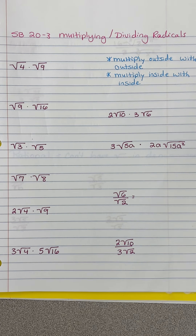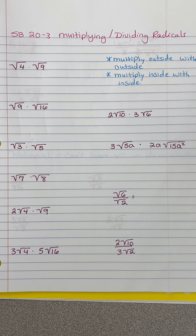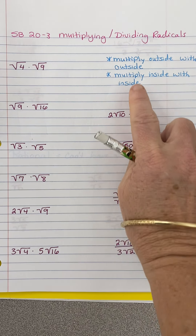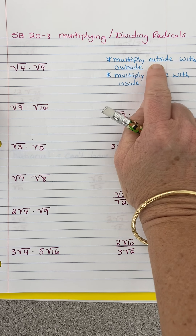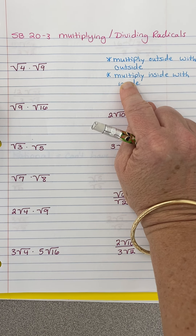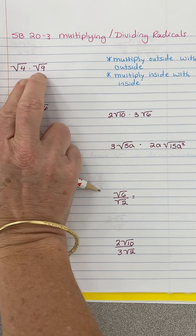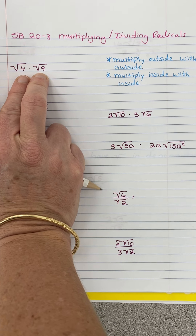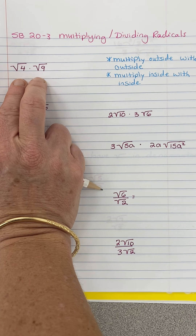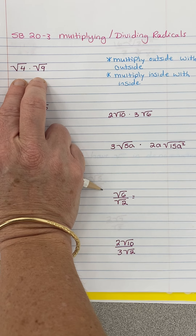This lesson is going to be talking about multiplying and dividing radicals. The gist here is we multiply outside with outside, and inside with inside. Similarly to adding and subtracting, we can simplify first and then multiply, or we can multiply and then simplify.